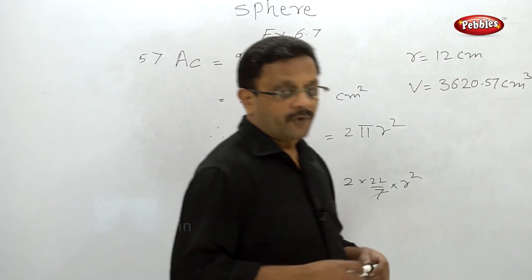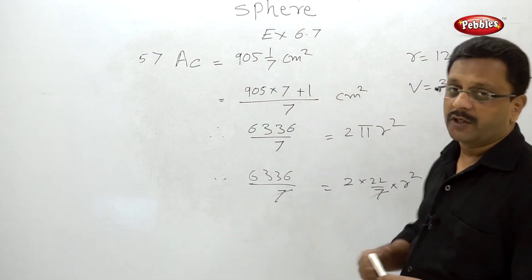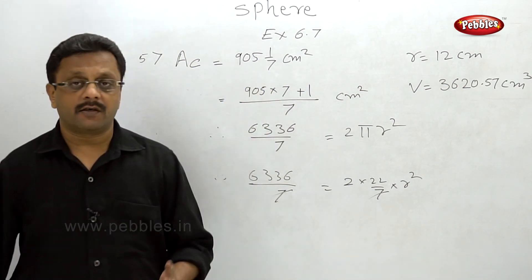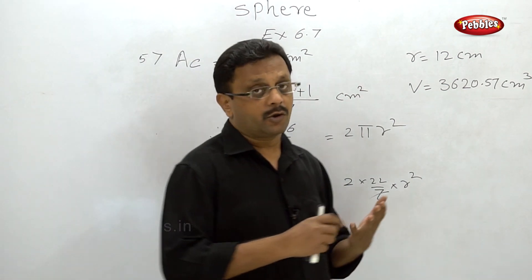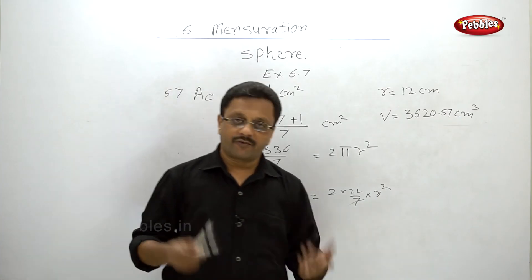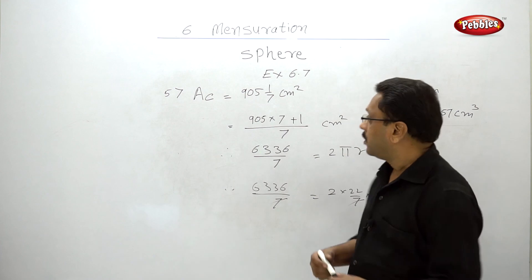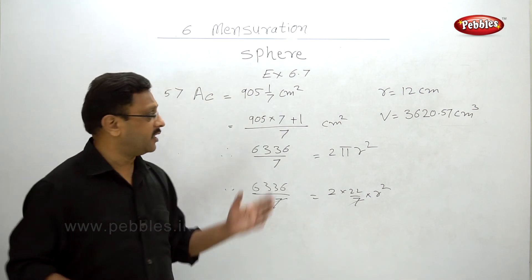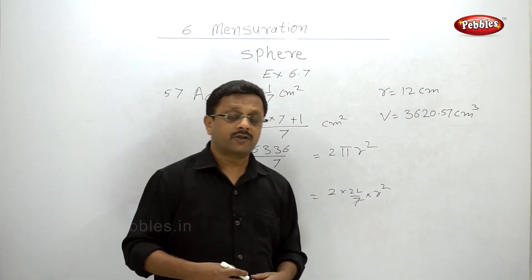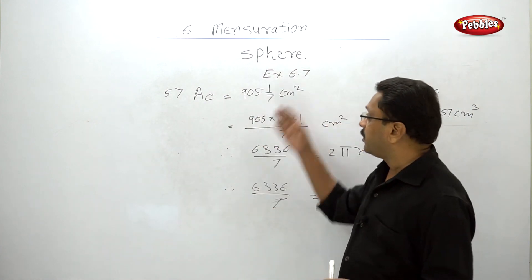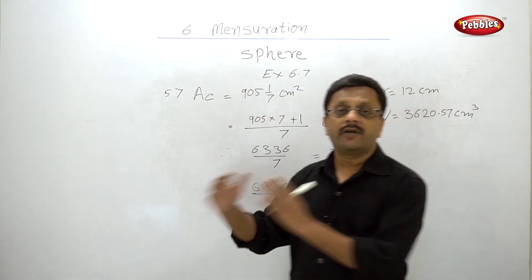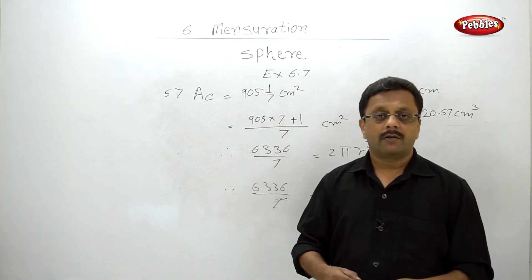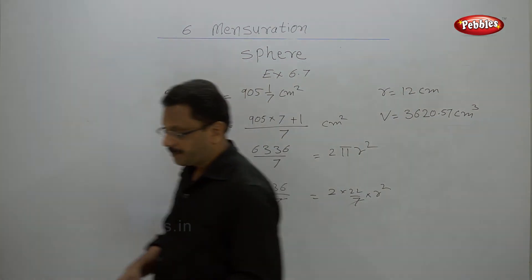We are now finishing exercise 6.7. As I told you, when dealing with single solid figures like a sphere, hemisphere, cone, or right circular cylinder, the calculations are straightforward. But now we are going to start the next topic — the application — which involves the combination of figures. Let us move on to the next topic.